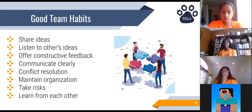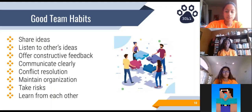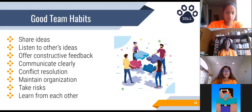Here are a few good habits that should be carried out by team members to ensure core values are being applied. This list includes sharing ideas, actively listening to each other's ideas, offering suggestions and constructive feedback, communicating clearly, resolving conflicts, staying organized, taking responsible risks, and learning from each other.